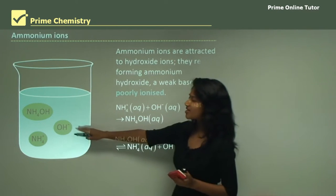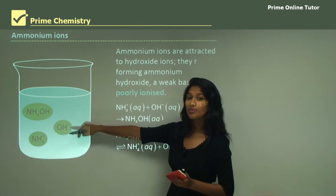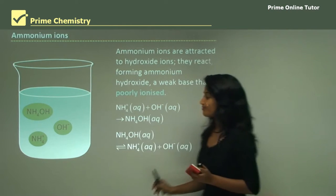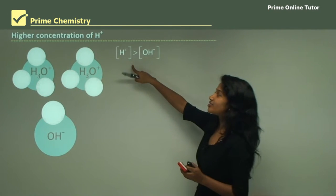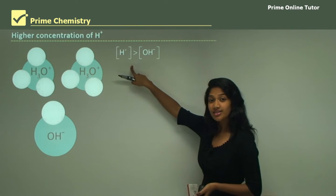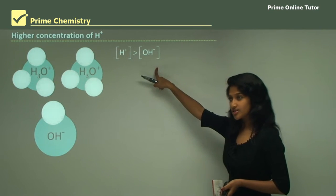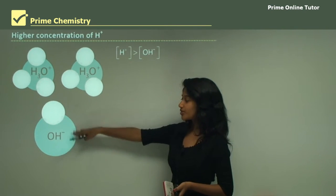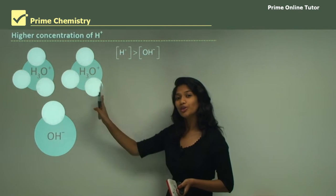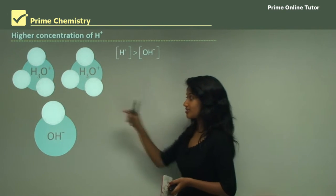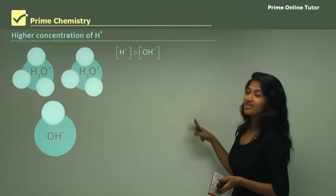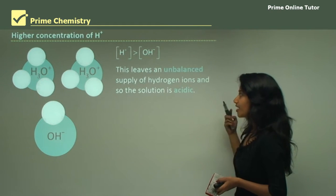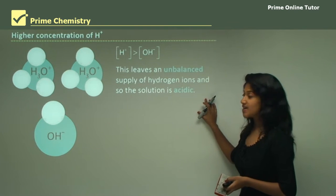So the concentration of hydroxide ions is lower than the concentration of hydrogen ions. Our hydrogen ion concentration is greater than our hydroxide ion concentration because only one molecule of hydroxide ions forms compared to two molecules available. This leaves an unbalanced supply of hydrogen ions and the solution is acidic.